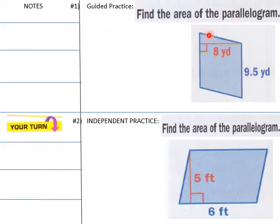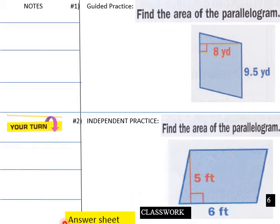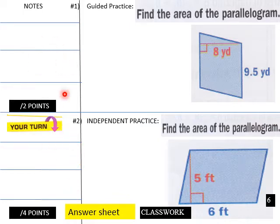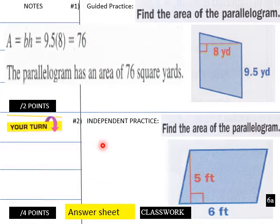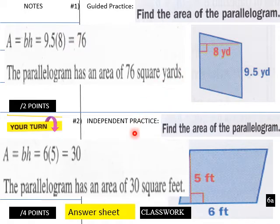Okay into our first guided practice. Find the area of this parallelogram. Student same thing down here. Pay attention so you can do your independent practice here. 2 points for guided, 4 points for independent. Okay into our guided now. So the area of this would be 9.5, this is one side here times height. We know our height is 8. 9.5 times 8 is 76. So the area of this parallelogram is 76 square yards. And this is a freebie for you students. This must be your lucky day. It is 30 square feet for this parallelogram down here.